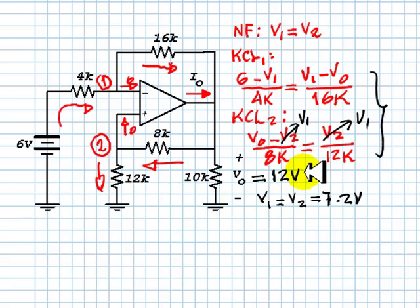So V0 is 12 volts, and V1, which is also V2 thanks to the negative feedback of the op-amp, is 7.2 volts. This voltage and this voltage there. This is one of the two answers that we need for this exercise.